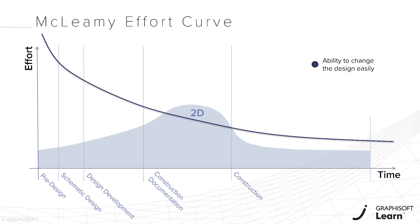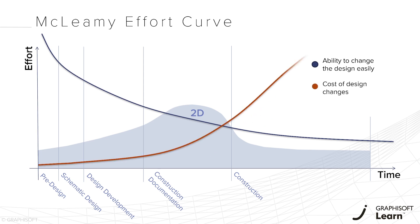As more of the design is documented, it becomes more difficult. By late construction documents, we cannot really make changes at all. The other factor is controlling cost. Similarly, in schematic design, we can easily change construction costs, but by the end of construction documentation, we don't have much influence over costs.